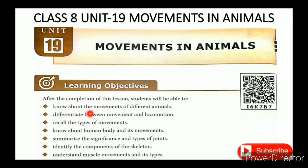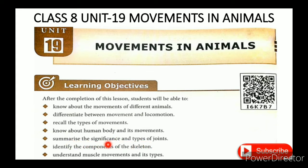The learning objectives are: know about the movements of different animals; differentiate between movement and locomotion; recall the types of movements; know about the human body and its movements; summarize the significance and types of joints; identify the components of the skeleton; understand the muscles, movements and its types.